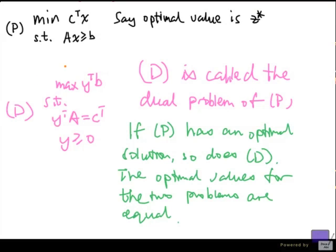Now, one thing that we can get immediately out of this is, if we find any feasible solution for d, then its objective function value is going to be a lower bound for the optimal value for p. Because we know that any feasible solution to d, its objective function value cannot exceed the optimal value for p.